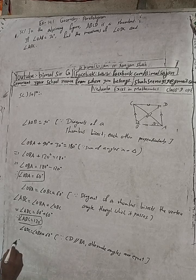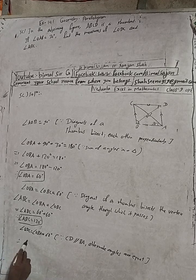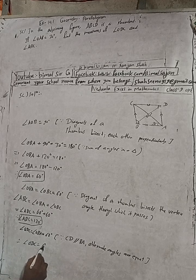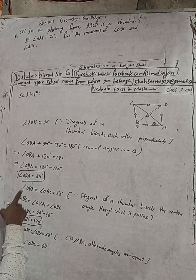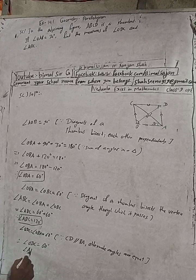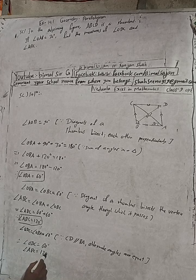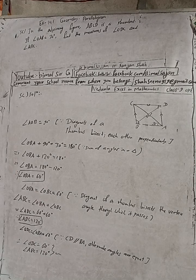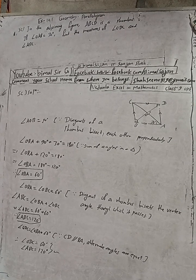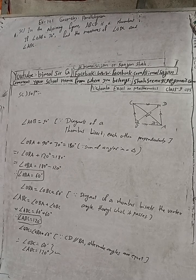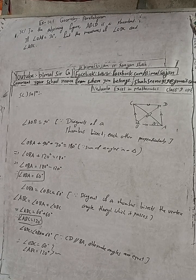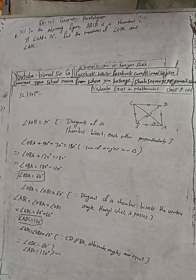So now we can write therefore: angle ODC is equal to 60 degrees, and angle ABC is equal to 120 degrees. So these two are the answers. Hope you understood the solution. Thank you.